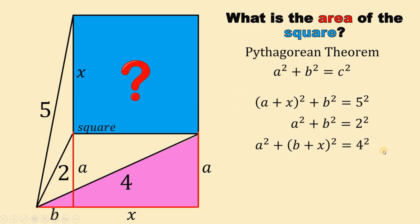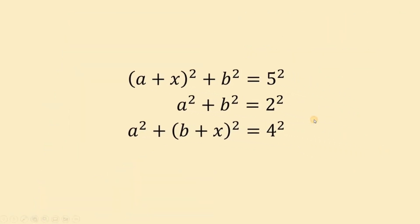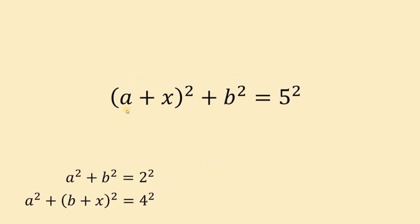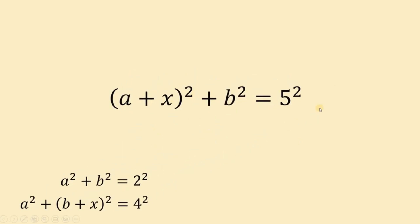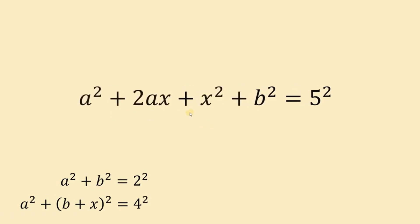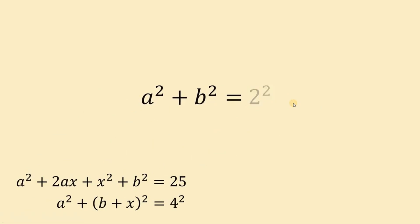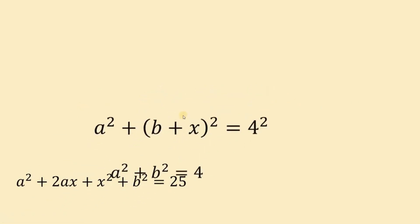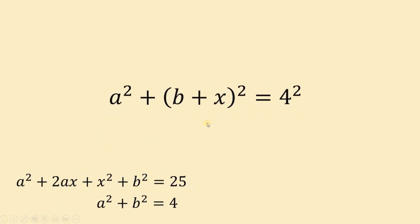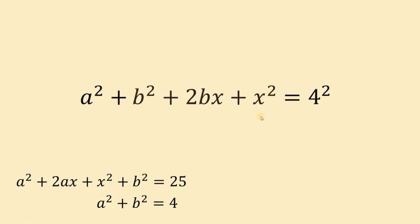Now let's focus on these three equations and simplify each of them. So we have (a + x)² + b² = 5². Expanding (a + x)² gives us a² + 2ax + x², and 5² is just 25. Now the second equation: a² + b² = 2², and 2² is just 4. And then the last equation: a² + (b + x)² = 4². Expanding (b + x)² gives us b² + 2bx + x², and 4² is just 16.